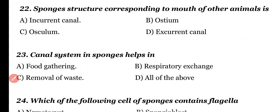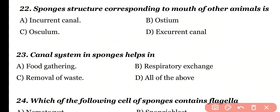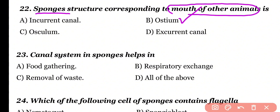Question number 22. The sponge structure corresponding to the mouth of other animals is: in-current canal, ostium, osculum, or ex-current canal. Correct answer is option B. Singular ostium or plural ostia are the structures in sponges that are similar to the mouth of other animals.